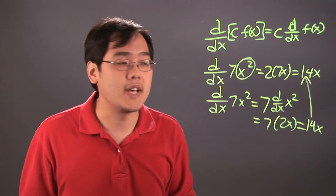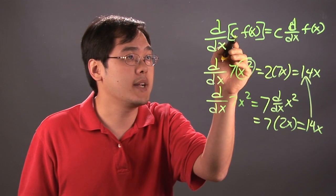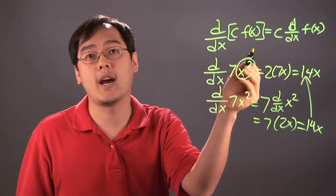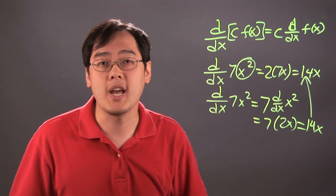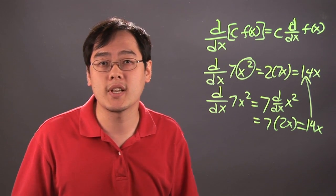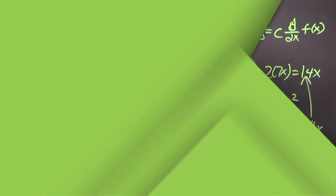So the constant multiple rule says that if you have a constant times a function, you can move that constant on the outside of the derivative rule, and the results will still be the same. So I'm Jimmy Chang, and that's a brief illustration on what is the constant multiple rule.